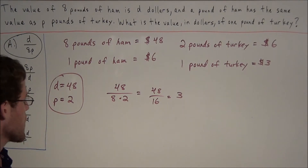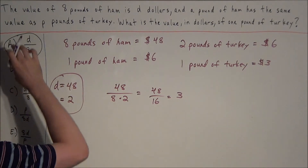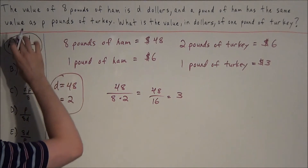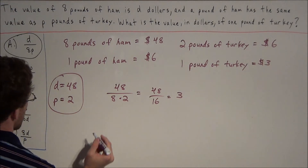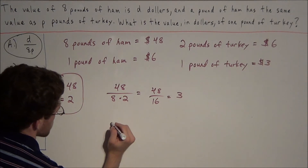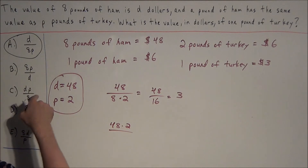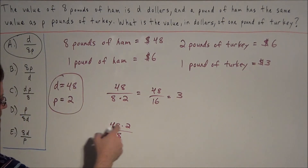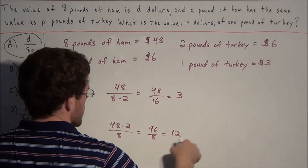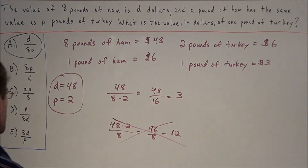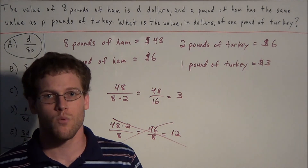So we have two solutions to this problem. I personally like to use the first solution because plugging in random values through all the answer choices can take an extra 2 minutes. For instance, if we tried choice C first, we'd compute d times p divided by 8, which is 48 times 2 divided by 8, giving 96 divided by 8 equals 12 — which doesn't match the 3 dollars we need, so we'd have to discard it and try the next one. This method can waste a lot of time, so it's good to know both but pick the one you prefer.